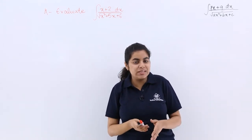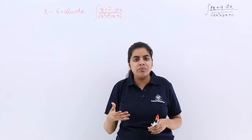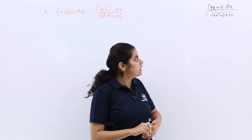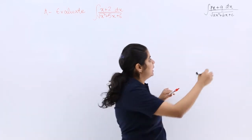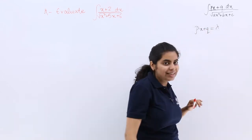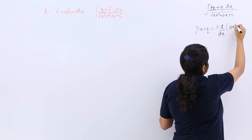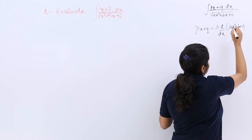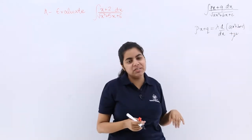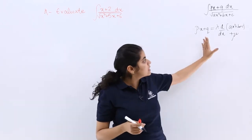What we are going to do is resolve the numerator, which is linear, into a different form. For this general format, we resolve the numerator such that it is lambda times the differentiation of the denominator, plus mu. Then we compare lambda and mu with the left-hand side, which is Px + Q.